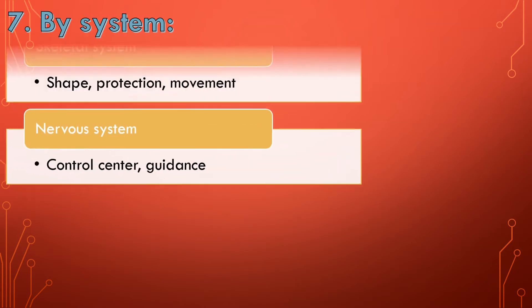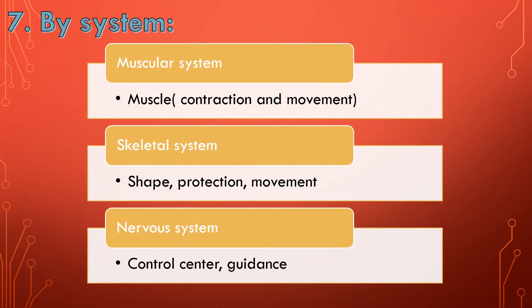Physiology can also be categorized by systems. You can see the muscular system - the muscular system is made of muscles that do contraction and help the body to move. There is the skeletal system that provides the shape to the body, protection to the body, and allows movement as well.